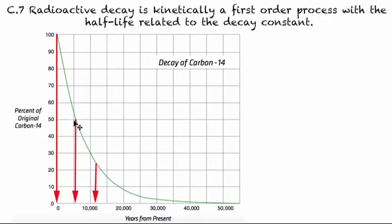And then if we look at that again, how long it takes to go from 50 to 25, that's another 5,730 years. And to go half again, another 5,730 years. So what you can see is that we again have a constant half-life. If we connect that back to our kinetics unit, we know that is a first-order relationship.